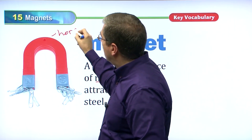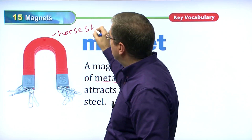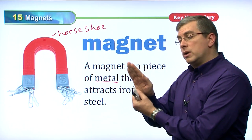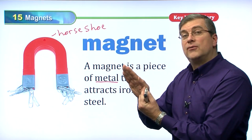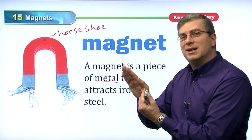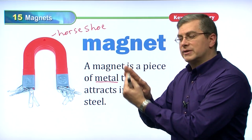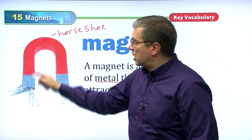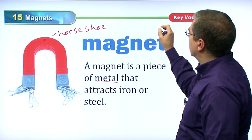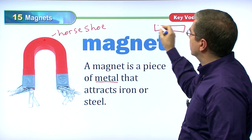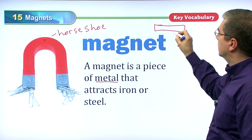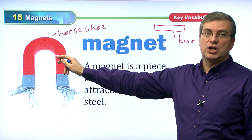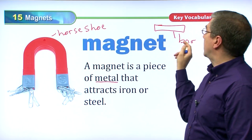We call this a horseshoe shape because we make a shoe for the horse, and the foot of the horse is shaped like this. Some magnets are shaped like a horseshoe, but many other magnets are just shaped like a bar — that's a bar shape.